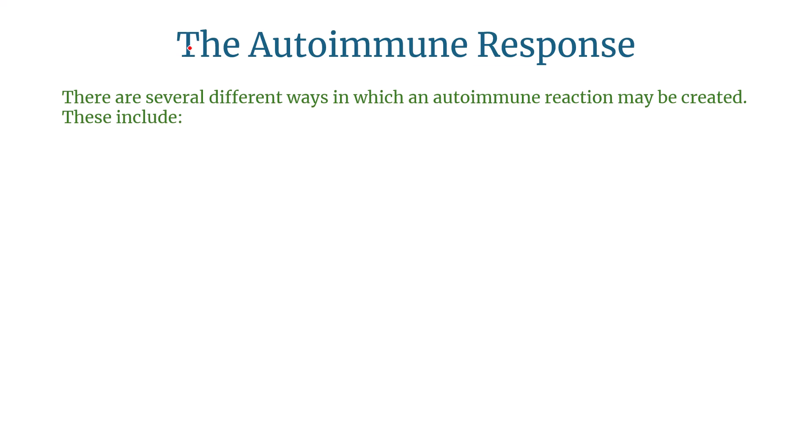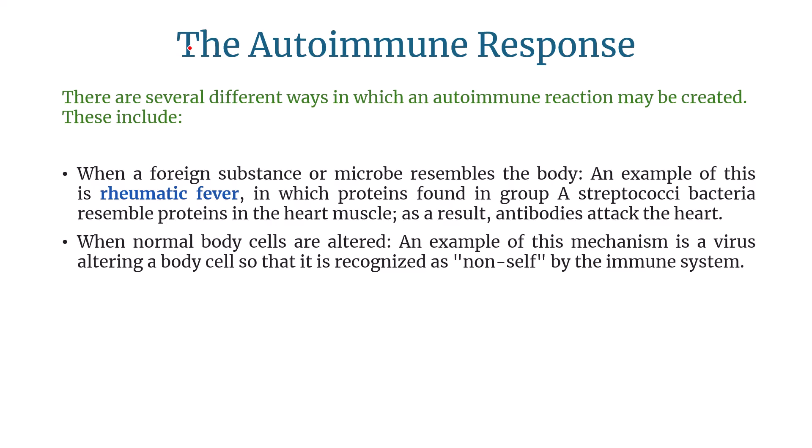When an autoimmune disease occurs, the reaction causes inflammation and tissue damage. There are several different ways in which autoimmune reactions may be created. One is when a foreign substance or microbe resembles the body's cells. An example of this is rheumatic fever, in which there is a protein found in group A Streptococcus bacteria that resembles a protein present in the heart muscle cell.